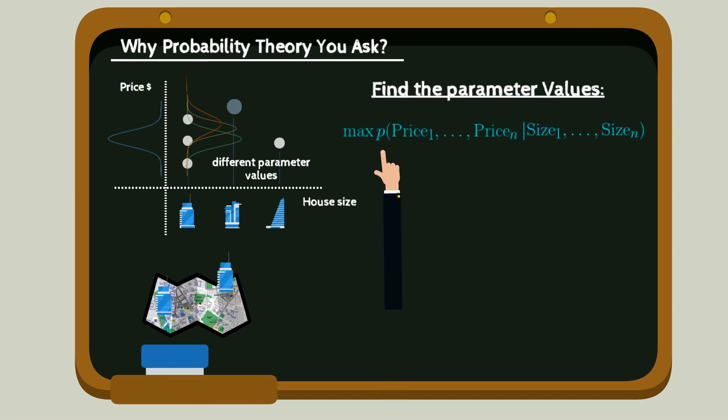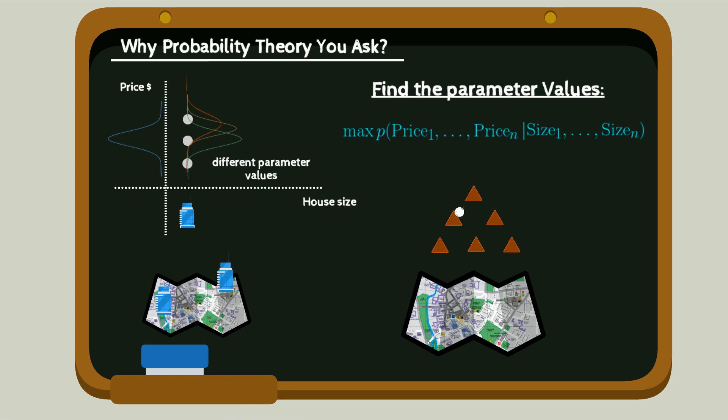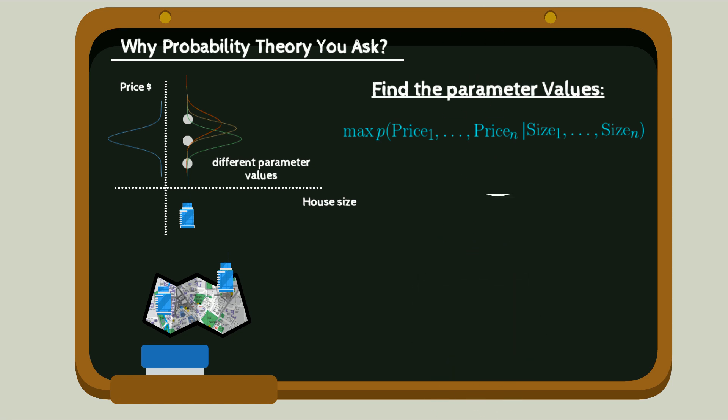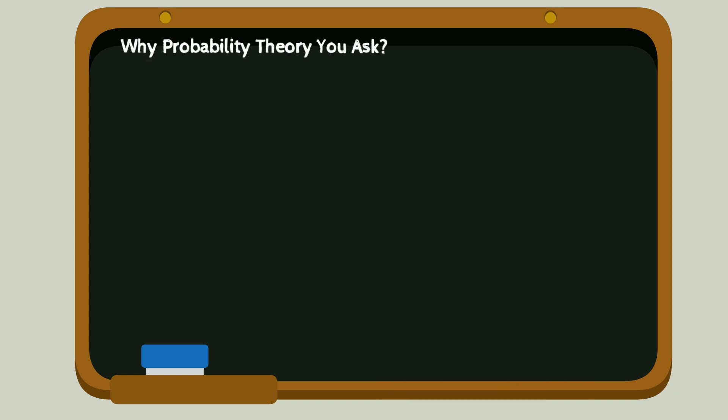Dealing with this equation is difficult. To make it easier, we impose a simplifying assumption stating that data is identically independently distributed or iid. This allows us to factorize p of price 1 to price n, given size 1 to size n, as the product of p of price i, given size i.